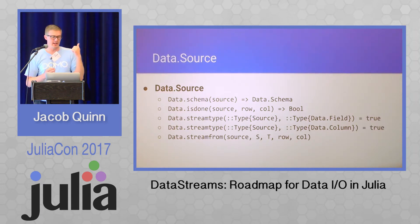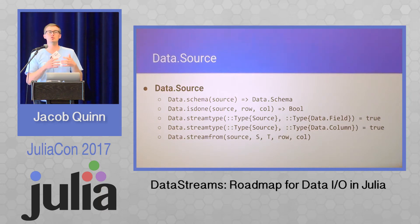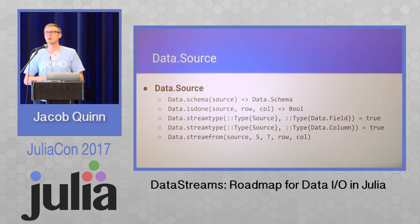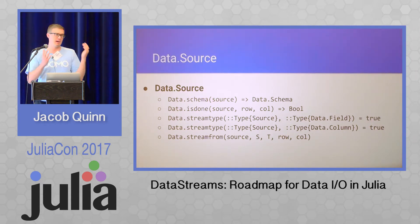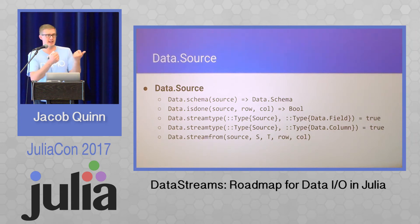The interface for a data source looks like this. You need to define a data_schema method, which returns a data schema object. That's just a way to describe your data set: how many columns does it have, what are the types of those columns, how many rows does it have — or do you know how many rows it has? There's an option to say null — I don't know how many rows I have as a source. For example, SQLite: when you send a query to SQLite, for some reason it can't tell you how many rows are going to be returned. So data sources have that flexibility to say, I don't know how many rows I have, but here's the rest of my schema.